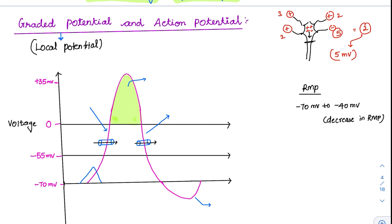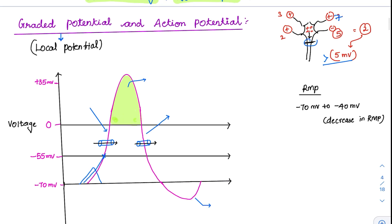Now suppose I increase the input so the potential crosses beyond 5 mV. Then the graded potential can reach the threshold. Whenever it reaches the initial segment of the axon, all the sodium channels there open up and create an action potential. So the graded potential is the prerequisite for action potential generation — whenever graded potentials add up and reach threshold, we get an action potential.